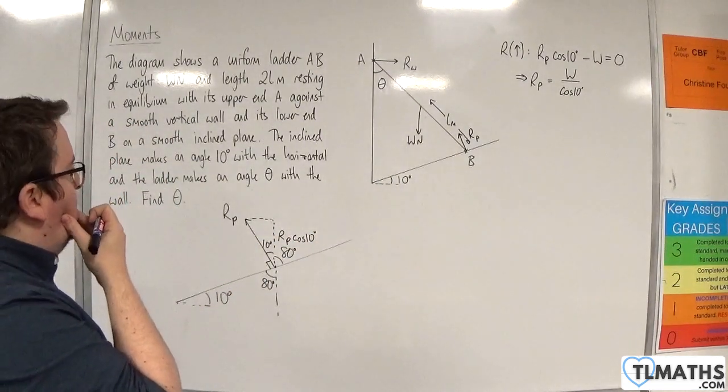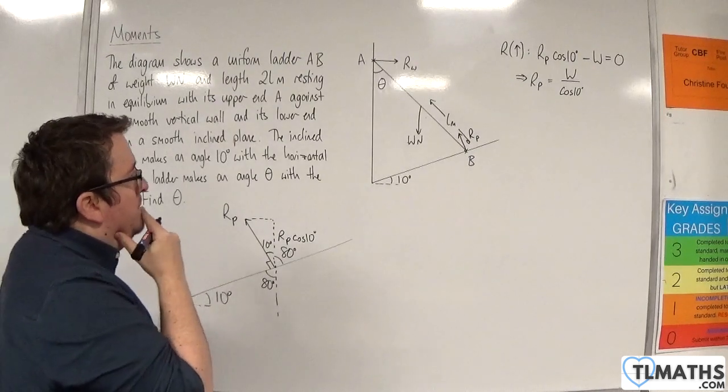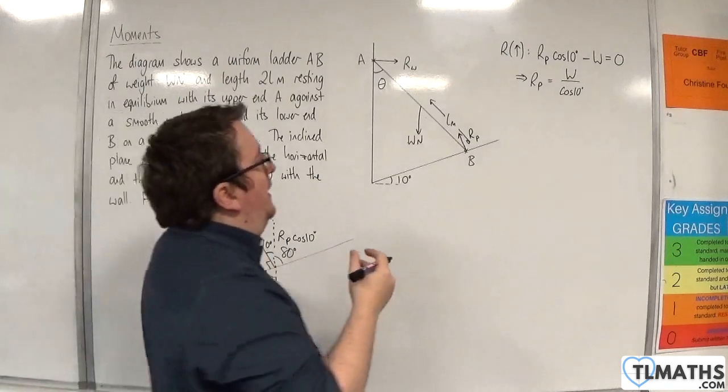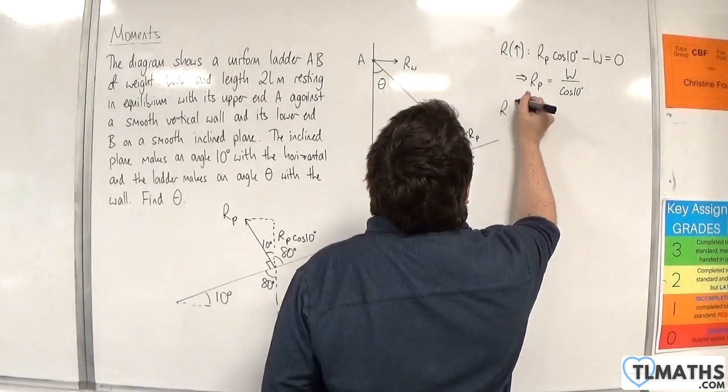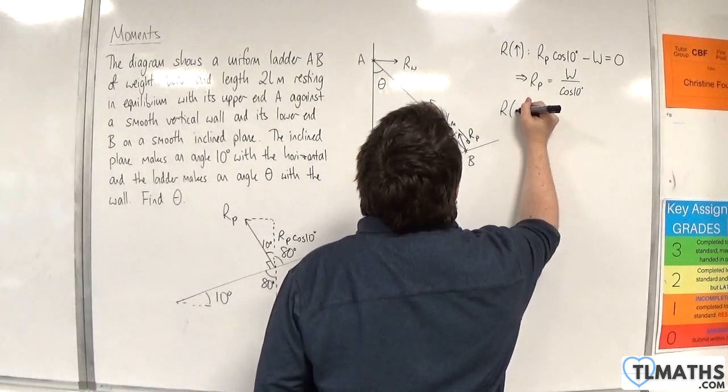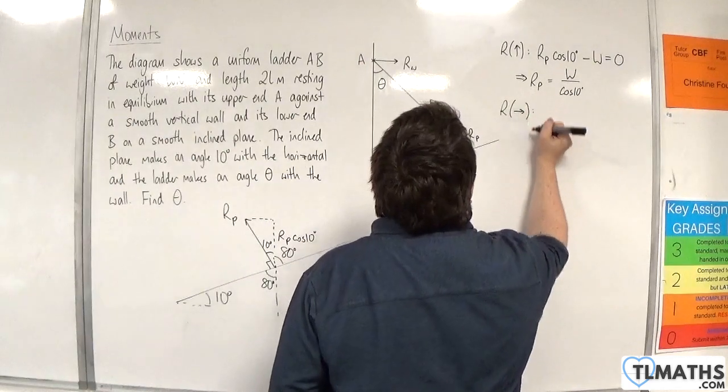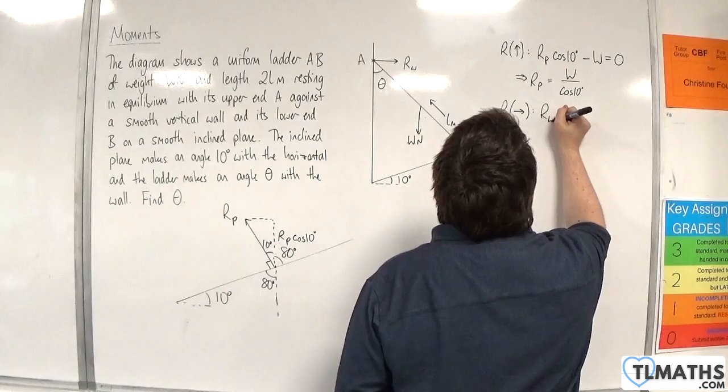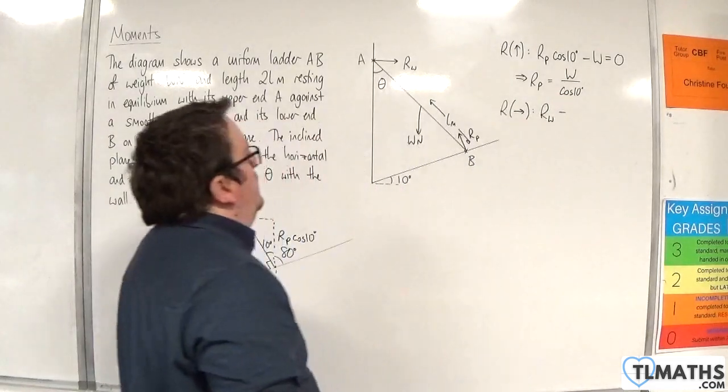Now, if we resolve horizontally, let's take to the right as positive. We've got the RW going to the right. Then, we've got the component of the RP force, which is that bit there, and that's going to be RP sine of 10 degrees.